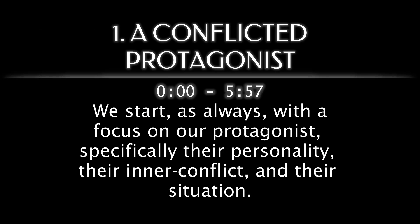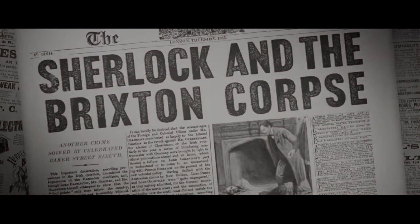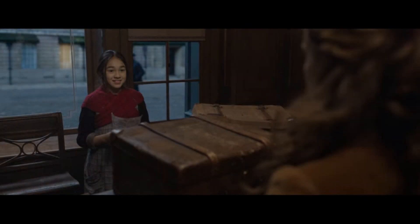We start, as always, with a focus on our protagonist — specifically their personality, their inner conflict, and their situation. Enola indulges in her detective ambitions like the Gentleman Classics, but she's forever overshadowed by Big Brother Sherlock. She rejects her obvious feelings for Tewksbury to focus on her career, and her first official case enters her office: the disappearance of Sarah Chapman.